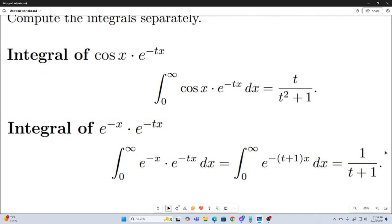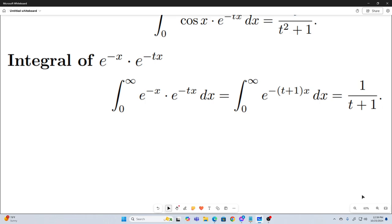That's e to the negative x times e to the negative tx. That just simplifies to e to the negative t plus 1x, which is going to evaluate 1 over t plus 1. Go ahead and verify that for yourself. So now we have the answers to the two separate integrals.